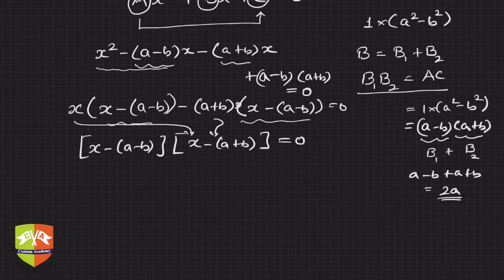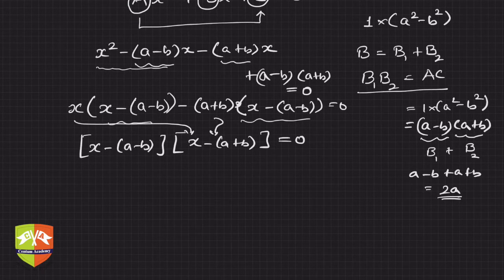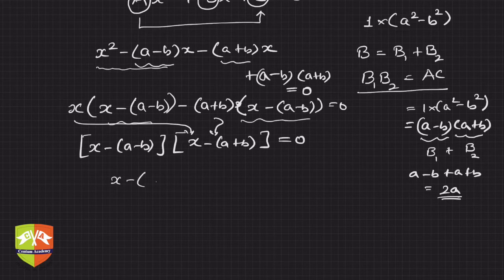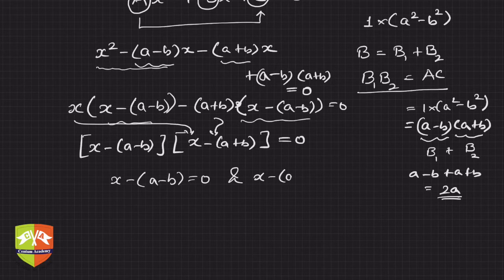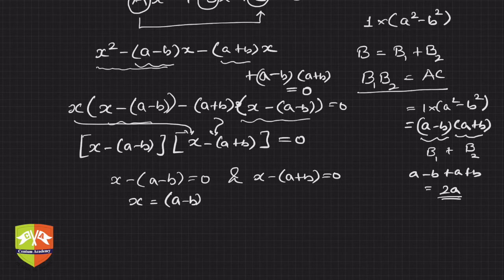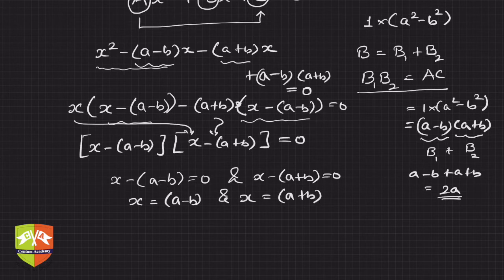Now the usual method: we will equate each of the two linear terms to zero. So you will get x - (a - b) = 0 and x - (a + b) = 0. Hence x = (a - b) and x = (a + b). These are the solutions to the given quadratic equation.